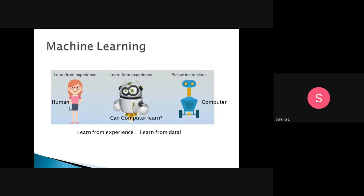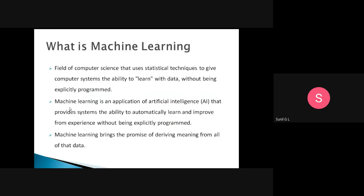Here, anyone can learn from experience, and a computer can learn from data. Data is nothing but experience for a computer. Machine learning is a field of computer science that uses statistical techniques to give the computer system the ability to learn from data without being explicitly programmed. This computer system will learn from the data and after that it will predict new things.